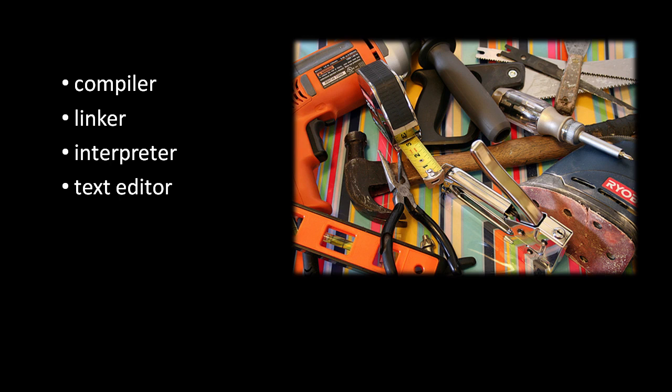The term tool in programming generically refers to any sort of program which programmers use to develop software. At a minimum, you'll need a text editor to write your source code and a compiler or interpreter to run your source code. While basic usage of these tools is generally straightforward, they typically have many complex advanced features. Some programmers prefer basic editors like Windows Notepad, but others prefer very complicated editors like Emacs or Vi, both of which have very steep learning curves. A debugger is a program that helps programmers track down the cause of bugs by executing code step-by-step while reporting what's happening in the program memory.